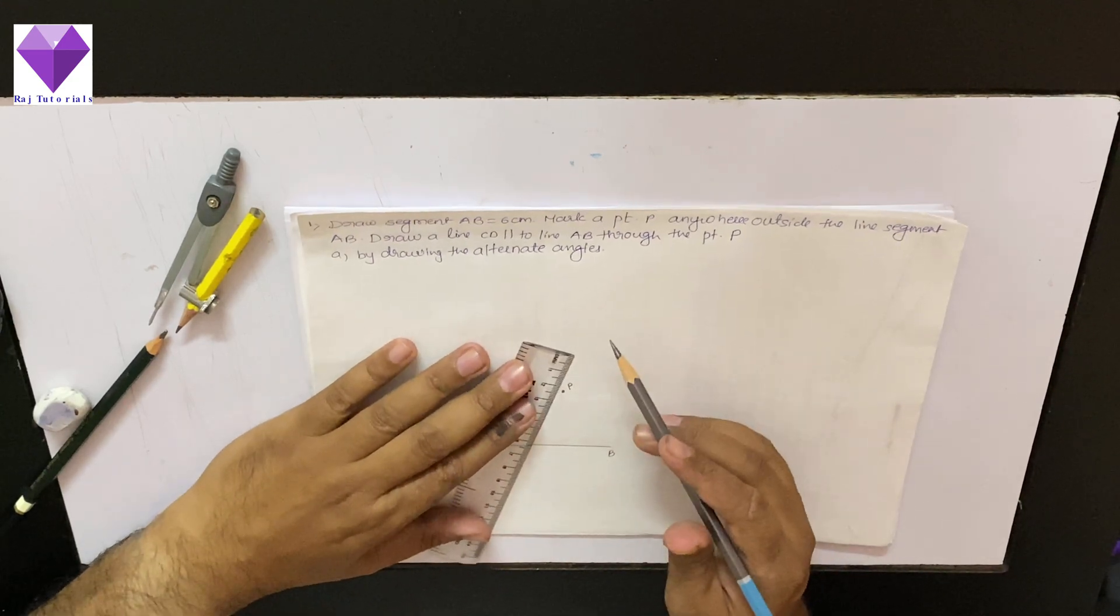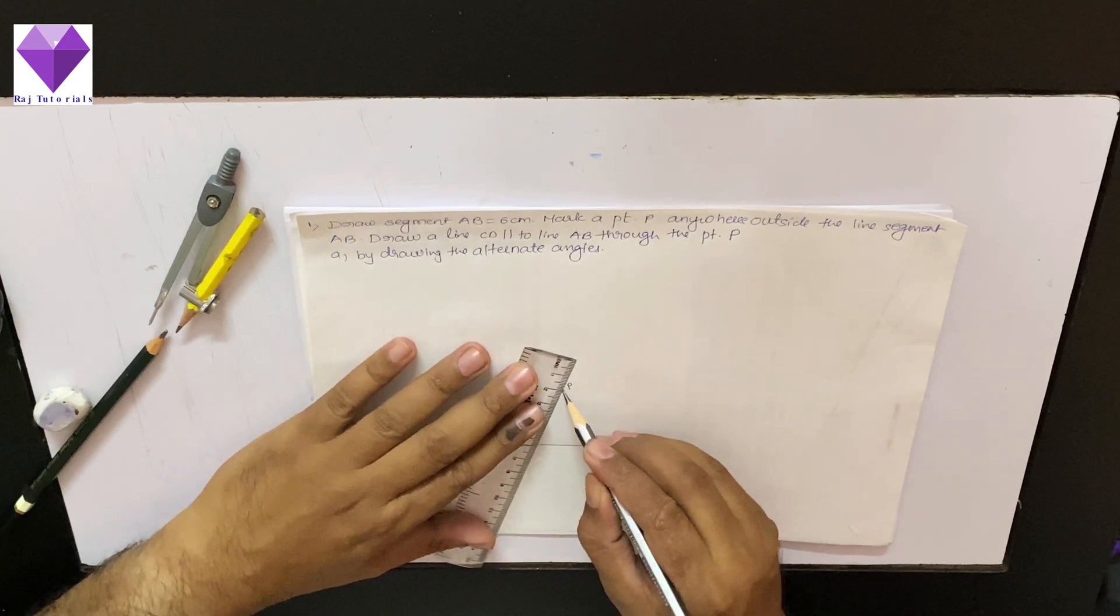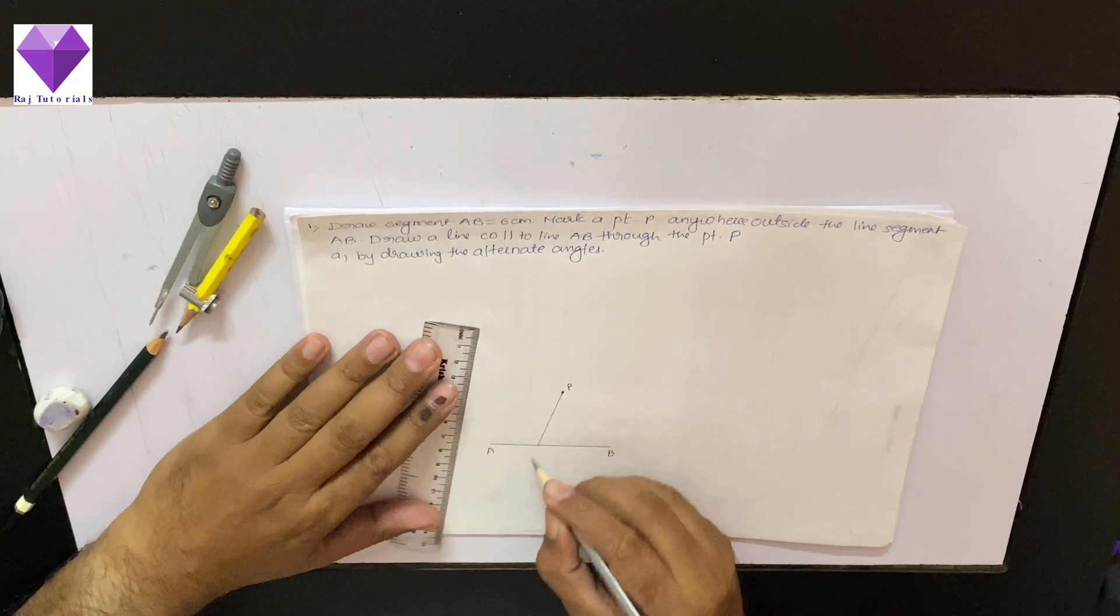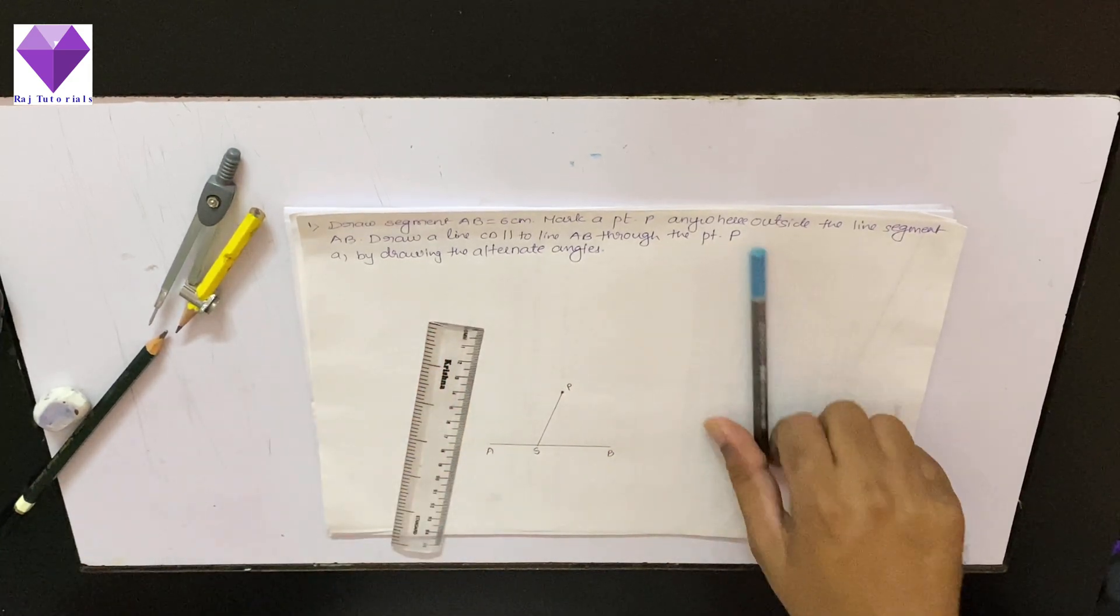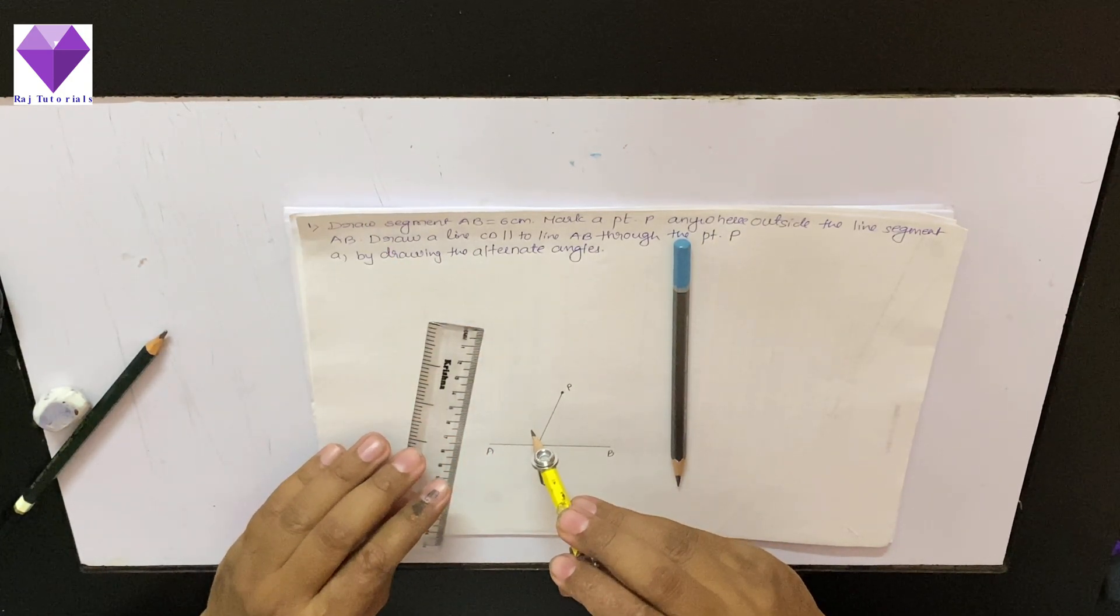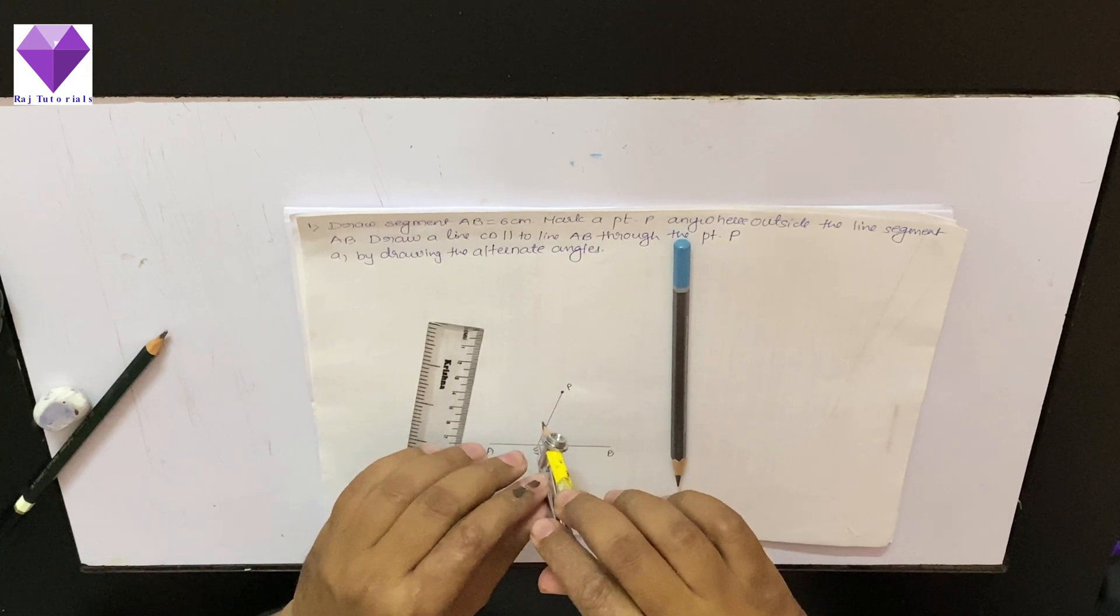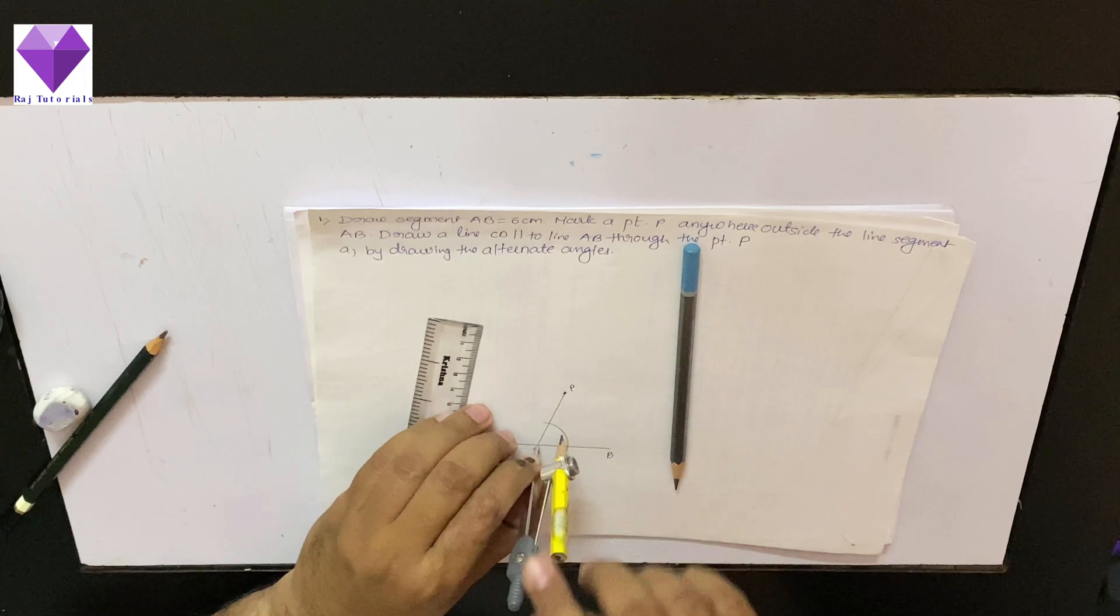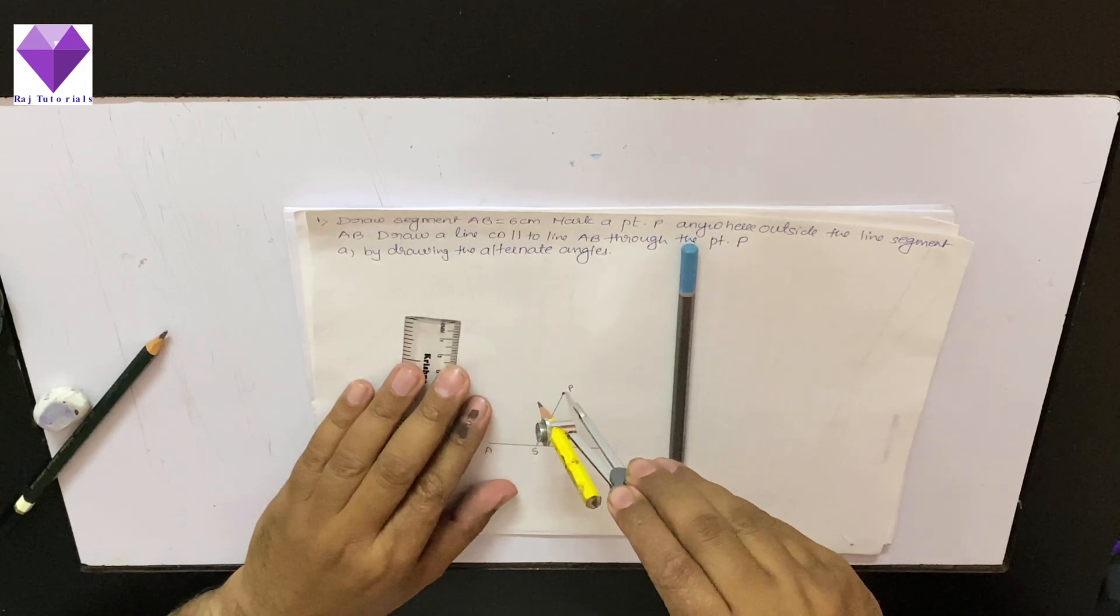With this P point I am joining it with AB and let us give it the name S. Now, with at S, I will draw an angle with any radius and with the same radius I will cut the angle from P.